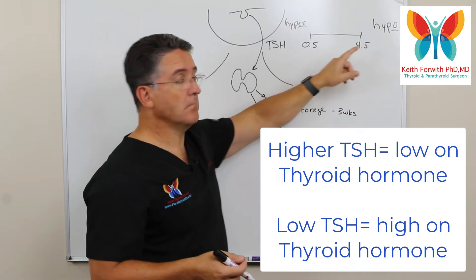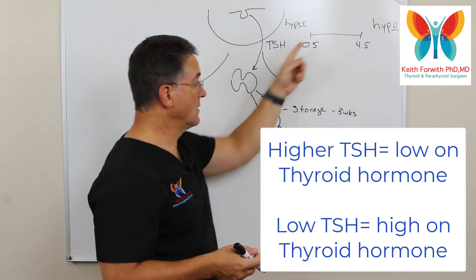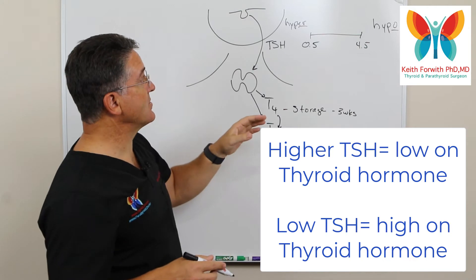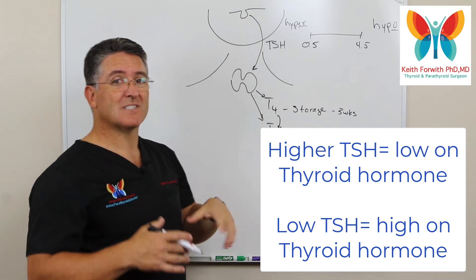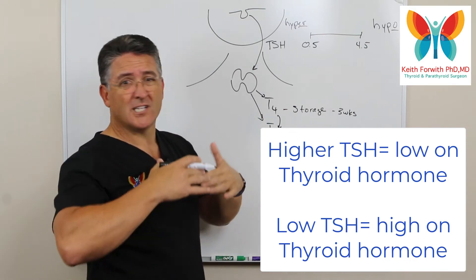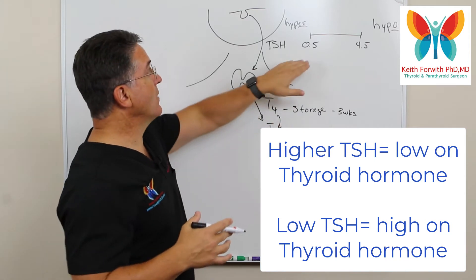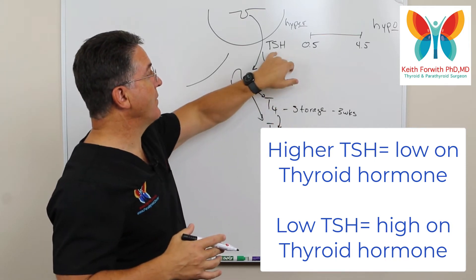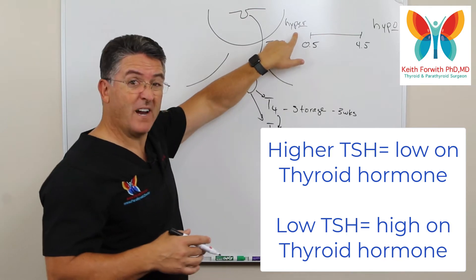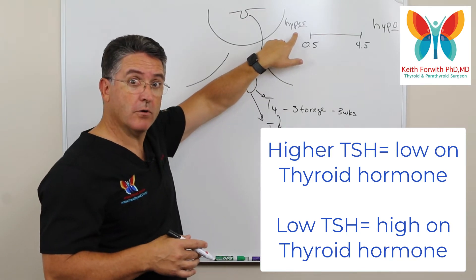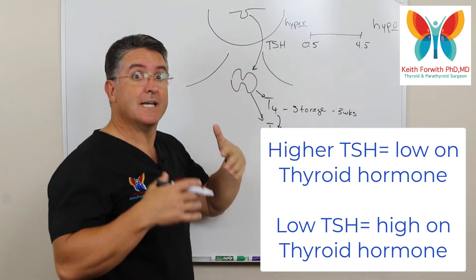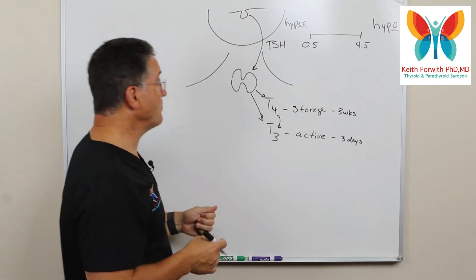Just the opposite: if there's lots of thyroid hormone on board and the brain thinks we don't need anymore, it will slow down the production of TSH. In people who are very hyperthyroid, you'll find that TSH goes down to near zero.